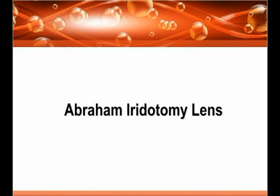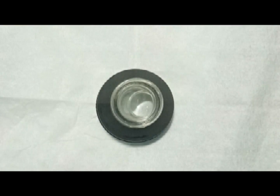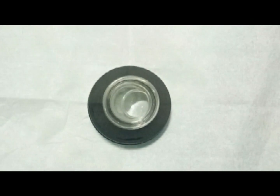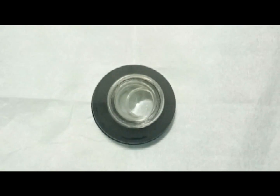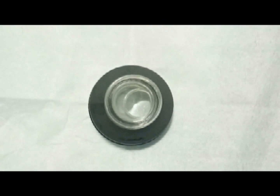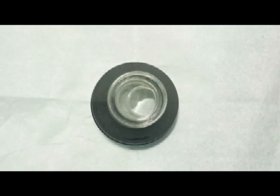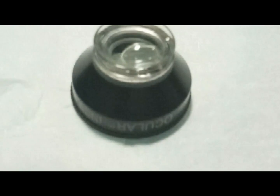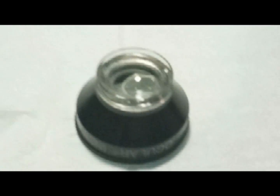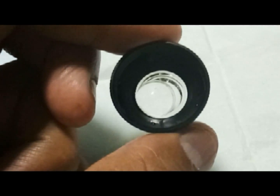The laser energy is concentrated at the level of the iris, the number of corneal epithelial burns is minimized, and the lens keeps the eye open. This lens is a plus 66 diopter plano-convex button bonded into a decentered 8mm hole. Here we can see the Abraham Iridotomy lens.